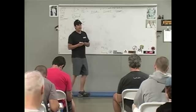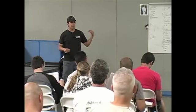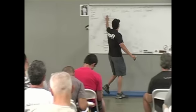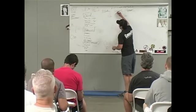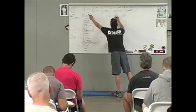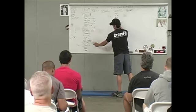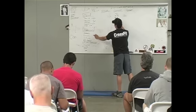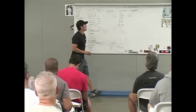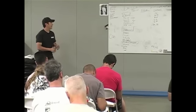Let's talk about couplets first. A couplet is basically taking two modalities and combining them. So you can take a movement from weightlifting and combine it with gymnastics, weightlifting with monostructural, gymnastics with gymnastics, gymnastics with monostructural, or monostructural with monostructural. That's pretty much all the possible combinations of couplets you can pair up.